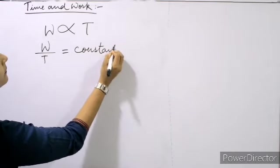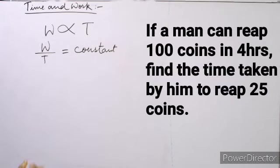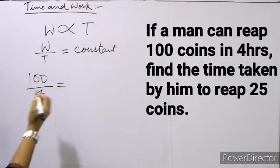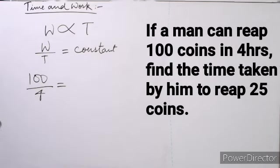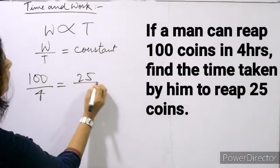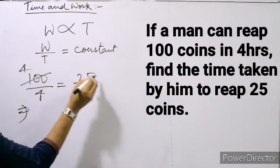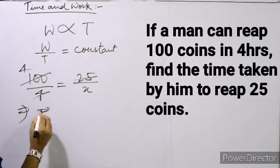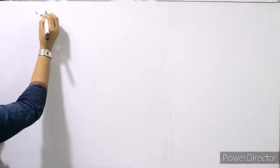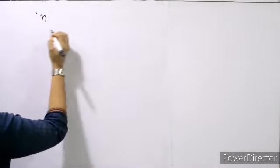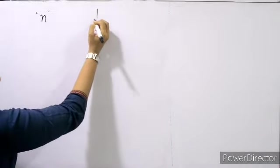If a man can reap 100 coins in 4 hours, how much time is taken by him to reap 25 coins? If a person can do a piece of work in n days, how much work will he do in 1 day? 1 upon n.